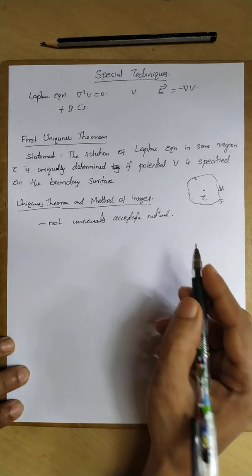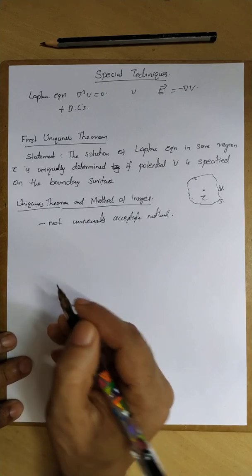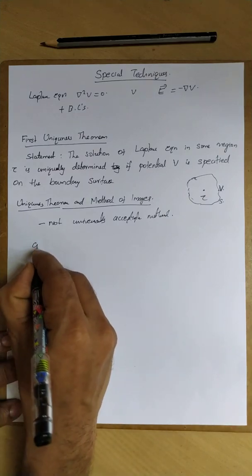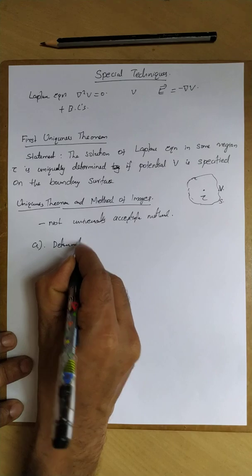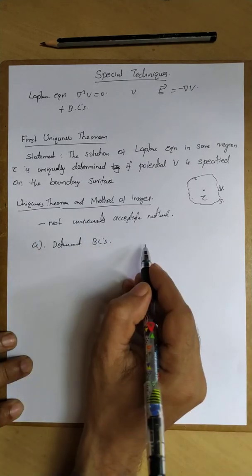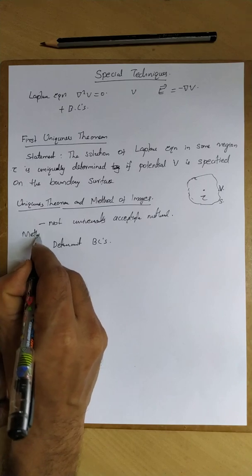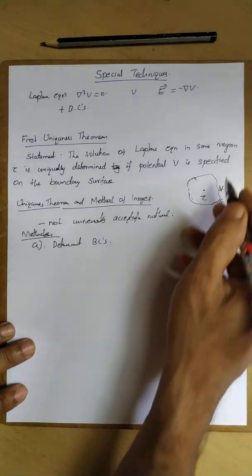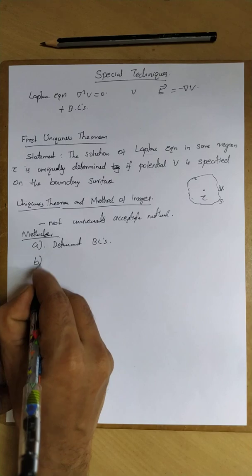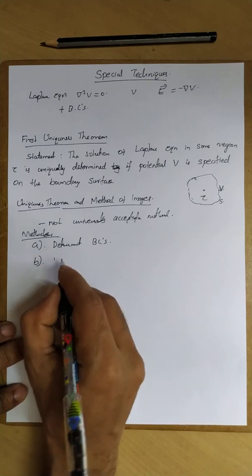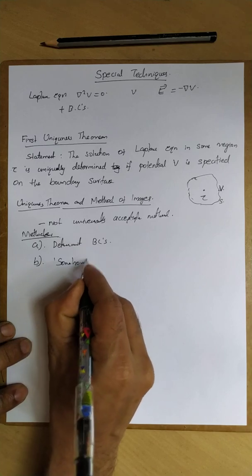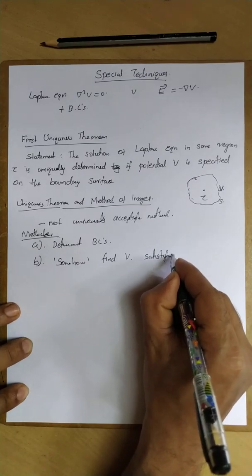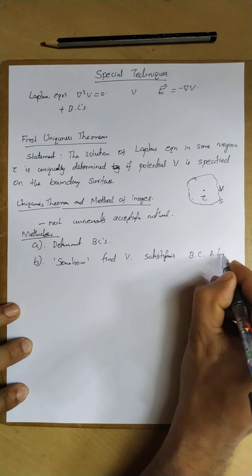It is not a universally acceptable method. The general procedure for the method of images is as follows. First, determine the boundary conditions. Second, find a potential — somehow find a potential which satisfies the boundary conditions and the Laplace equation.